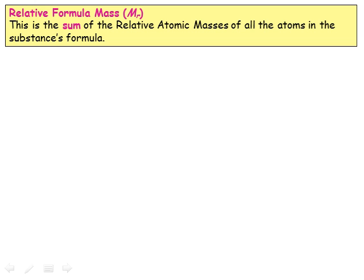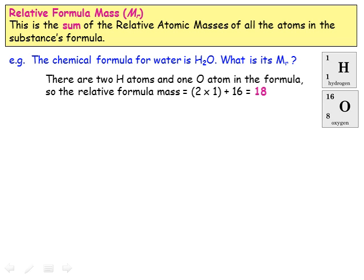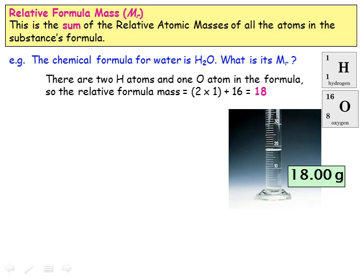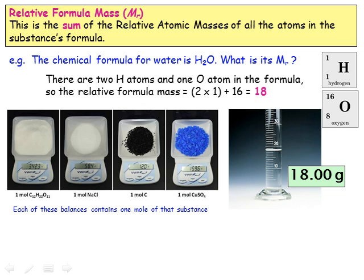This important idea of a mole of a substance works for compounds as well as for elements. The relative formula mass of a compound is the sum of the relative atomic masses of the atoms in it, according to its chemical formula. Water has the chemical formula H2O, so its relative formula mass is 2 times the relative atomic mass of hydrogen, plus the relative atomic mass of oxygen, which is 2×1 plus 16, which is 18. This means that one mole of water weighs 18 grams. If we work out the relative formula mass of any other compound and weigh out that mass, we have one mole of that substance.